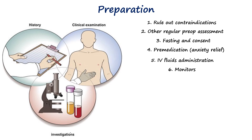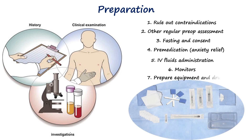All essential equipment and drugs are prepared including sterile gloves, antiseptic solution, spinal needle, syringes, local anesthetic, and emergency medications such as vasopressors and atropine, ensuring complete safety and readiness for spinal anesthesia.